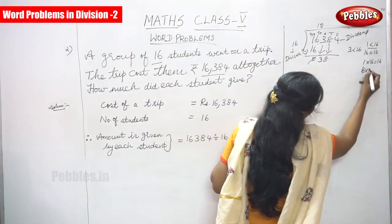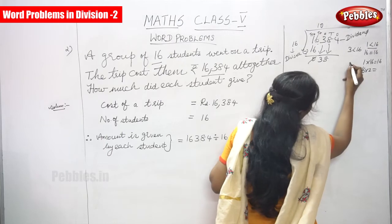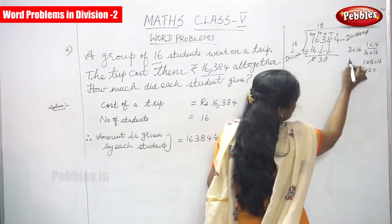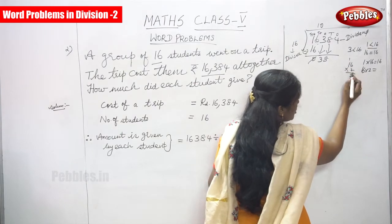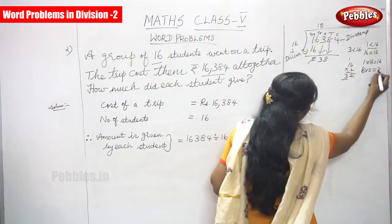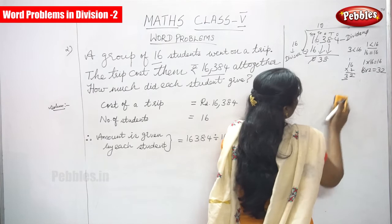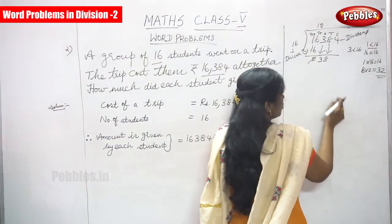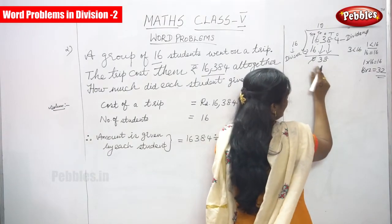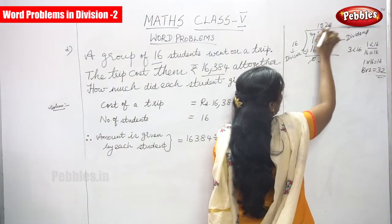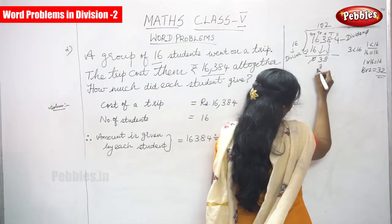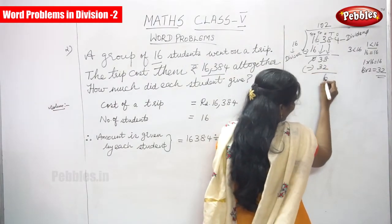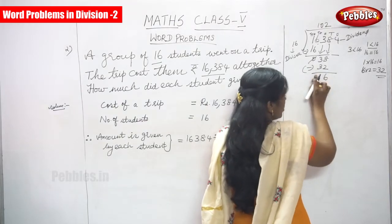Now, 16 into 2 equals 32. Since 32 is less than 38, 2 is the quotient digit. 2 times 16 is 32. Subtract: 8 minus 2 is 6, and 3 minus 3 is 0, giving remainder 6.